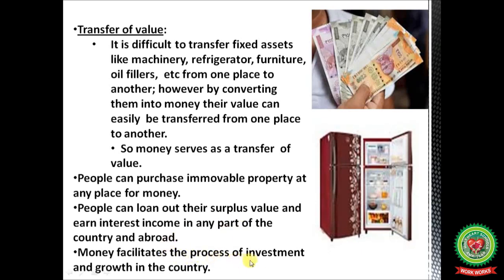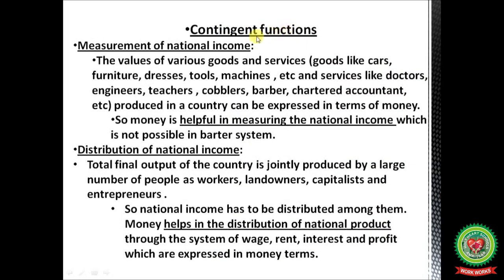Contingent functions — measurement of national income: the values of various goods like cars, furniture, dresses, tools, machines, and services like those of doctors, engineers, teachers, cobblers, barbers, and chartered accountants produced in an economy can be expressed in terms of money. Money is helpful in measuring national income for all goods and services produced in an economy within a particular year at a particular price, which is not possible in the barter system.